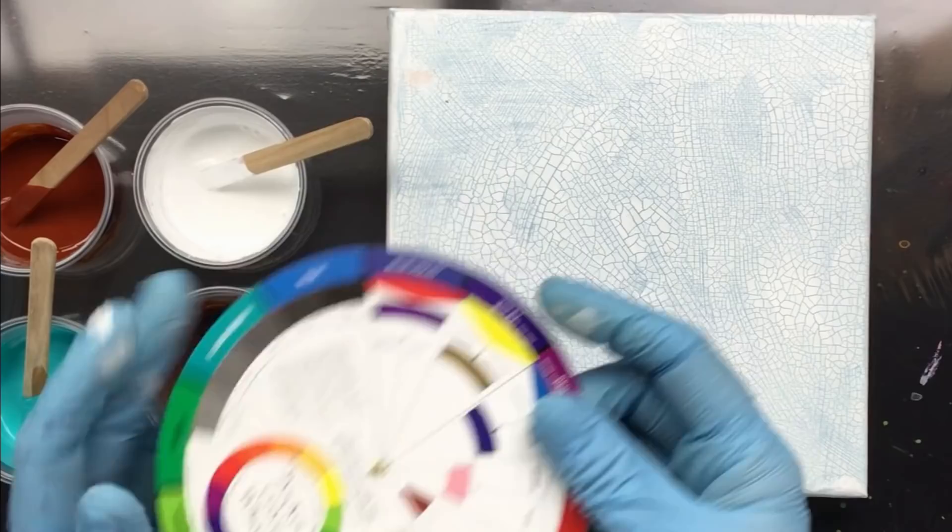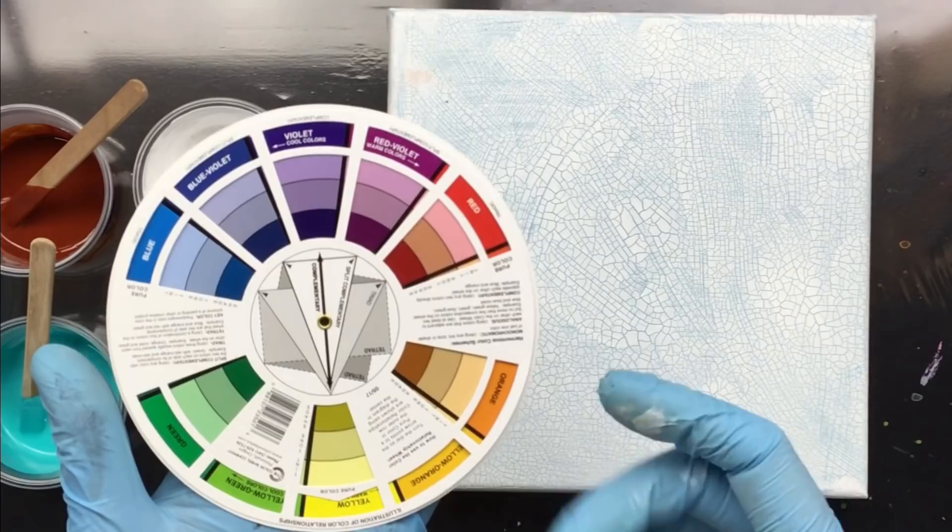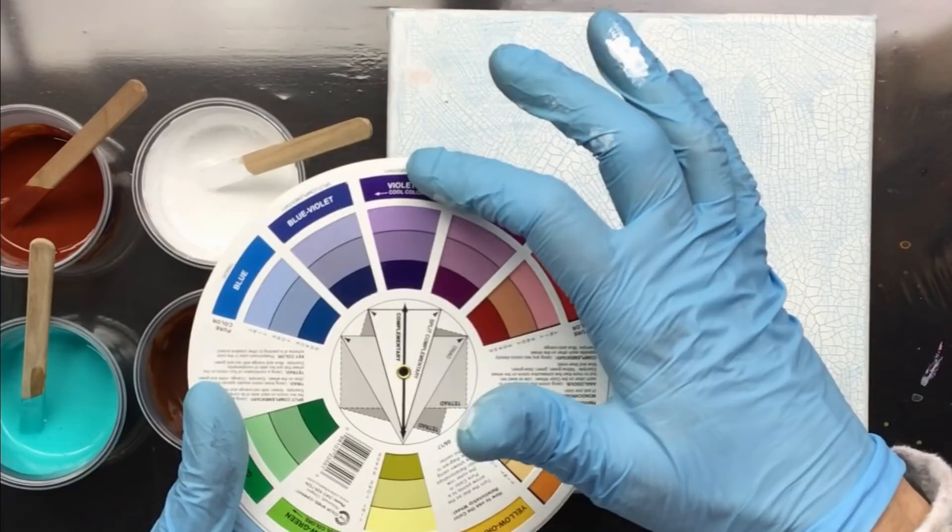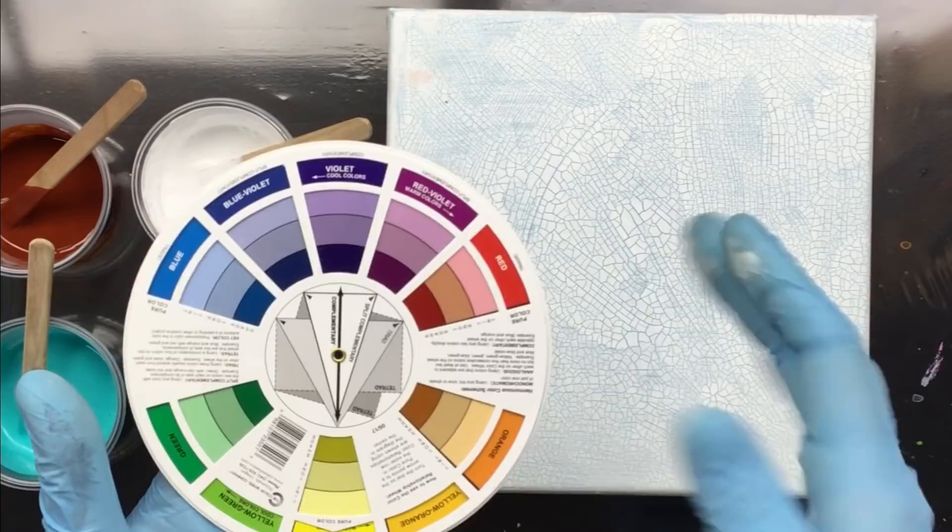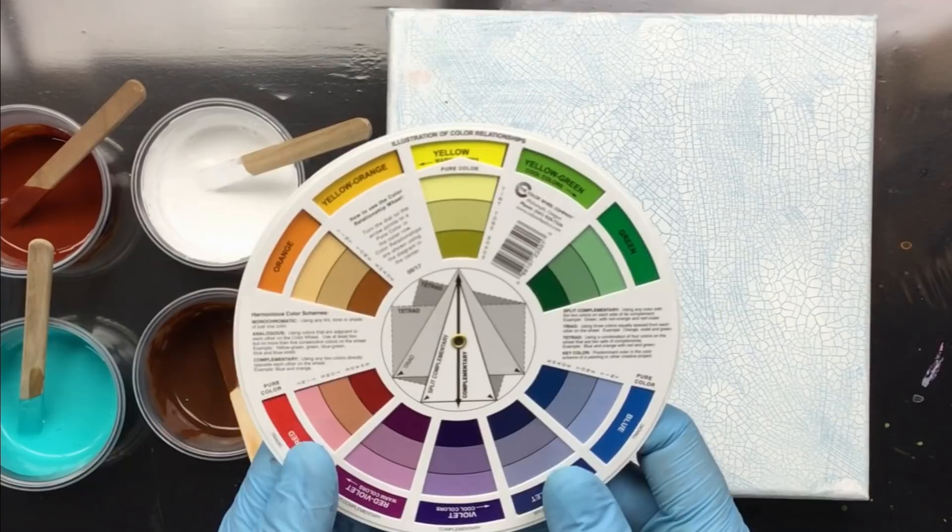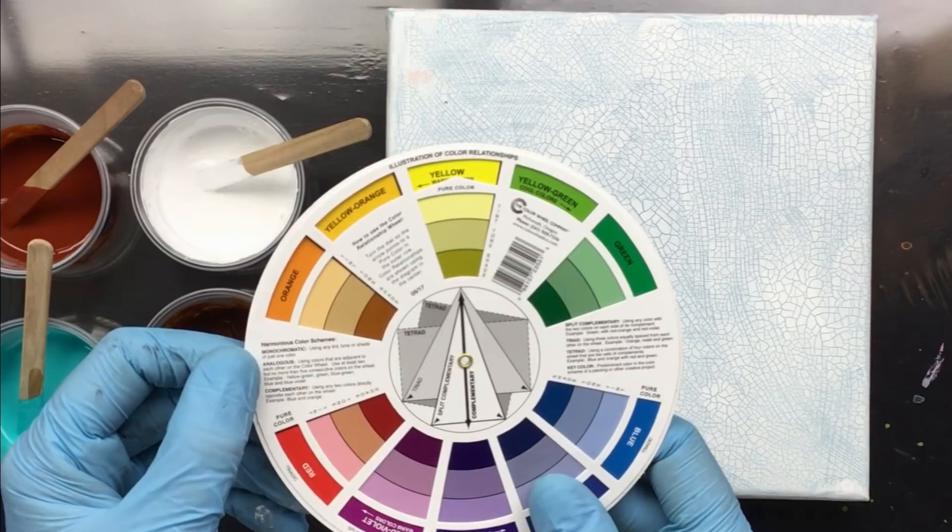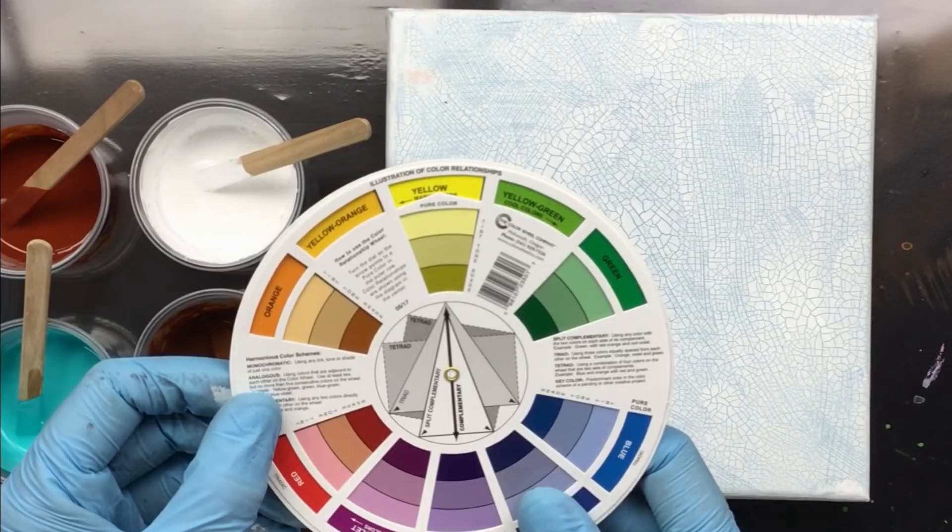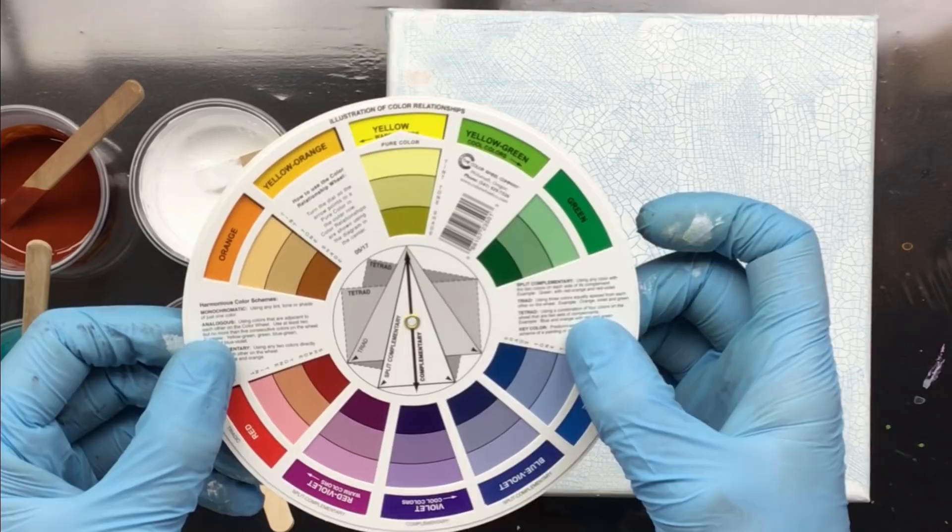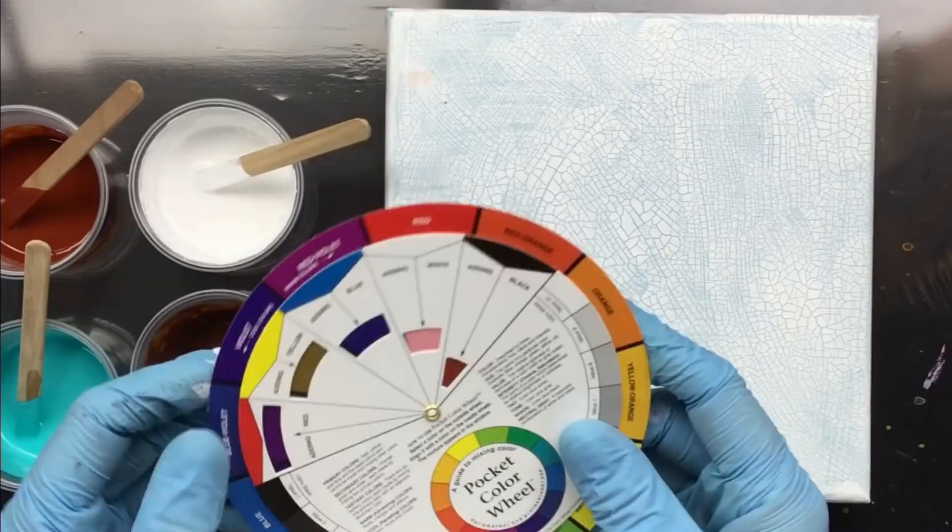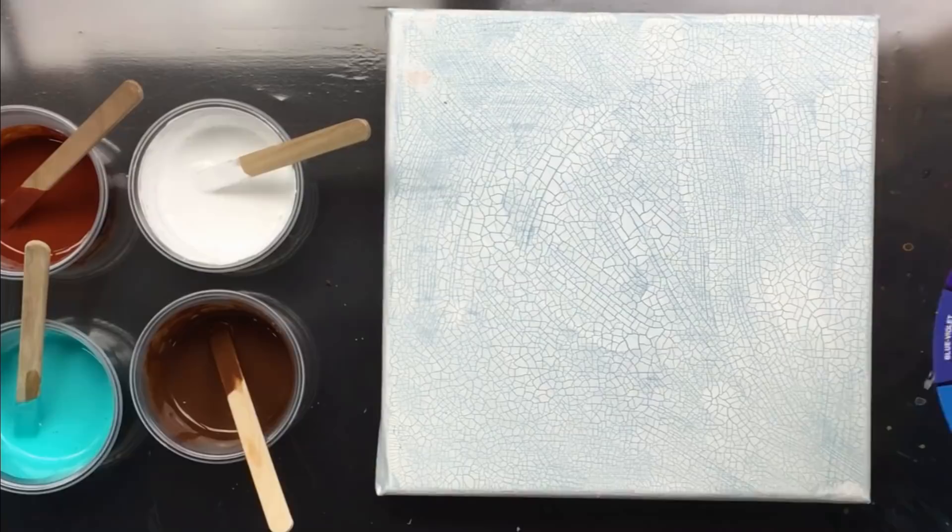On the back, they explain complementary colors and all these different things that make it very difficult to understand if you're not really into art. You have monochromatic, analogous, complementary, split complementary, triad, tetrad, key color—all that gibberish stuff. If you want to study this kind of thing, I think it takes everything out of making art. I just don't like it.